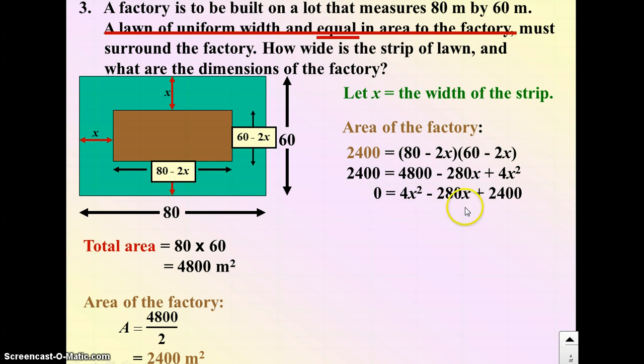Again, I can factor out the 4 or divide the whole equation by 4. I get this simple trinomial, and I can factor it again. What two numbers add to negative 70 and multiply to 600? Those two numbers are 60 and 10, both negative. So if I solve for this equation now, x would equal 60, or x would equal 10. Again, in the context of the question, only one of these dimensions makes sense.